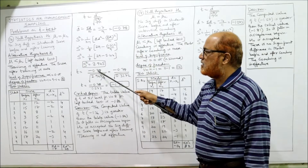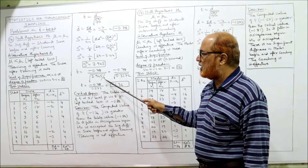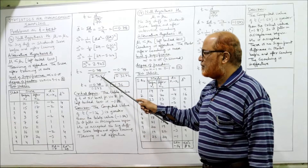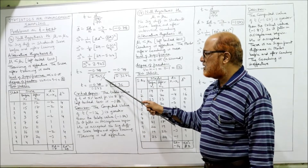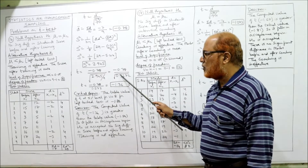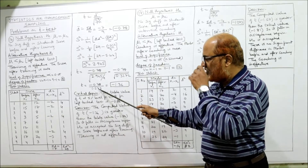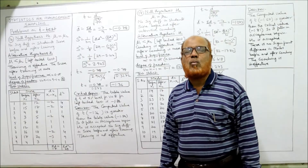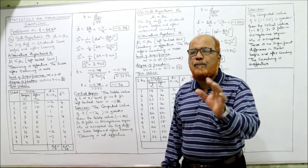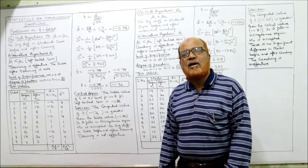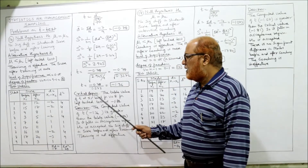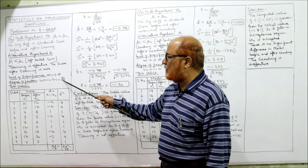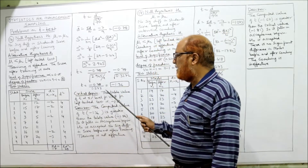Substituting: t = −0.78 / √(2.945/9) = −0.78 / √0.3272 = −0.78 / 0.7572. The computed value of t = −1.36. The table value of t at 5% level for v = 8 degrees of freedom for a left-tail (one-tail) test is −1.86.